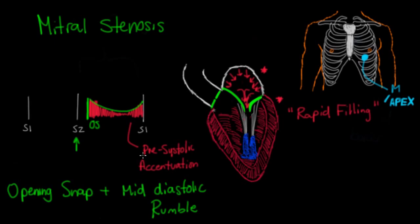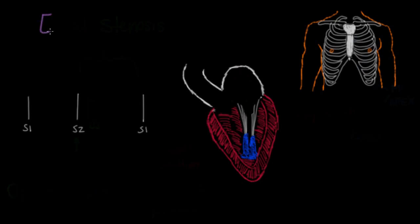To mention the right-sided equivalent: tricuspid stenosis produces the same murmur — an opening snap followed by a mid-diastolic rumble — but it would be heard in the tricuspid area instead.